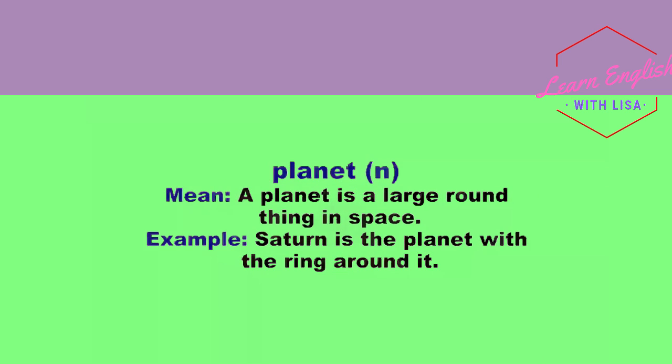Planet. A planet is a large round thing in space. Saturn is the planet with the ring around it.